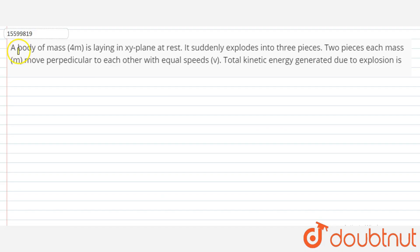So, this question says that a body of mass 4m is lying in XY plane at rest. It suddenly explodes into three pieces. Two pieces are of mass m and move perpendicular to each other with equal speeds v.